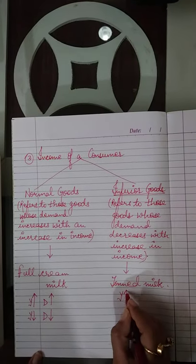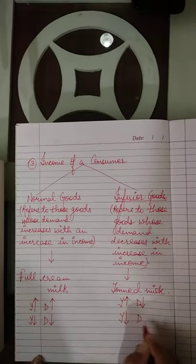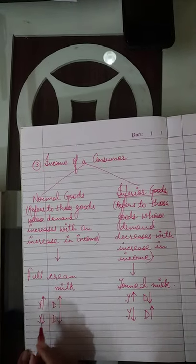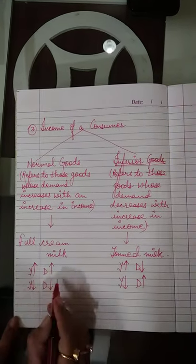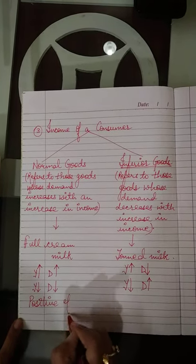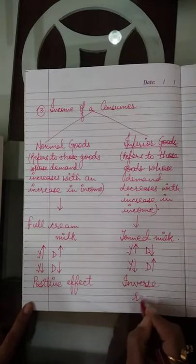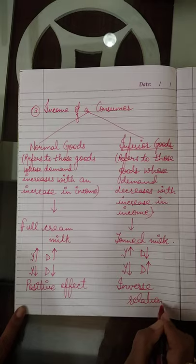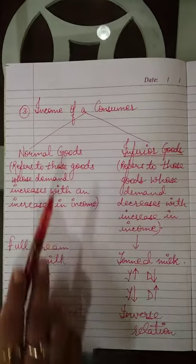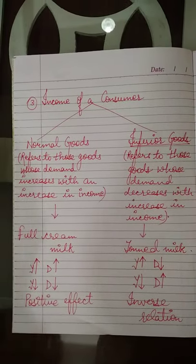जैसे जैसे income बढ़ती है, inferior goods की demand कम होती है; income कम होती है तो मजबूरी में inferior goods लेने पड़ते हैं। So for normal goods, income और demand में direct या positive relation है। And for inferior goods, income और demand में inverse या negative relation है।